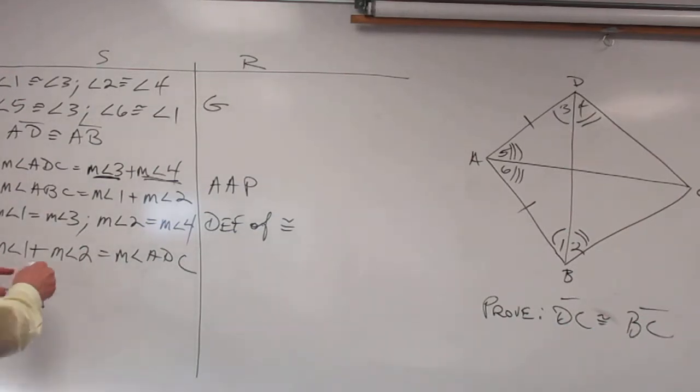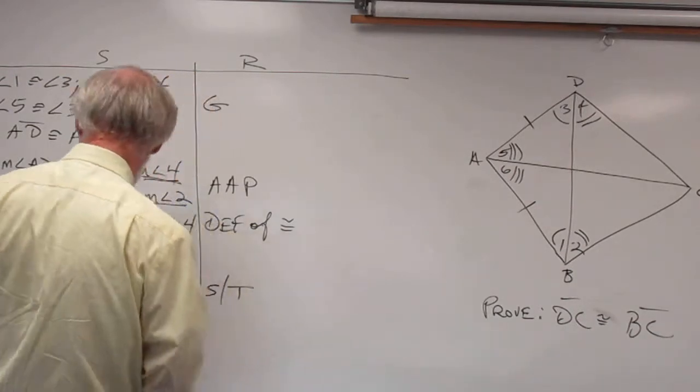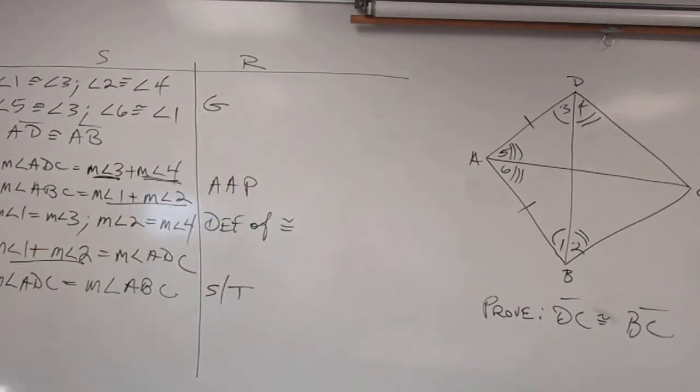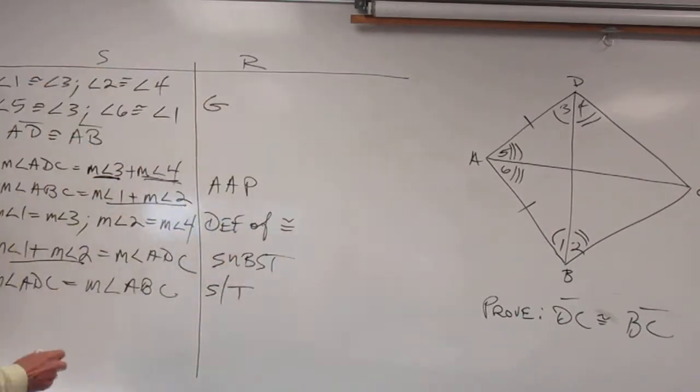Now step 5, I have measure of angle 1 plus 2 equals ADC, and measure of angle 1 plus 2 equals ABC. So I should be able to say now measure of angle ADC, and the reason for that would be substitution or transitive, and up here these were substitutions. So we'll just say substitution there.